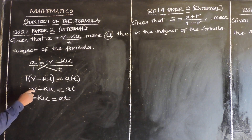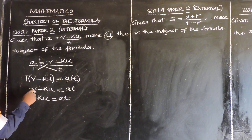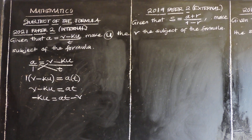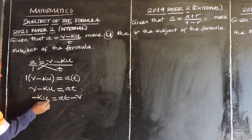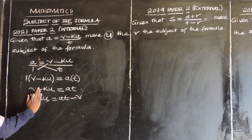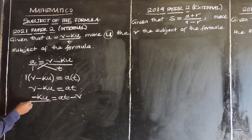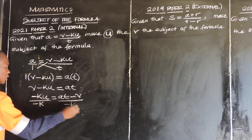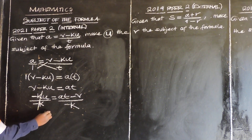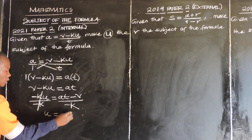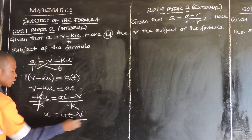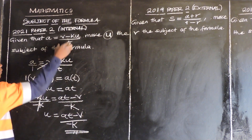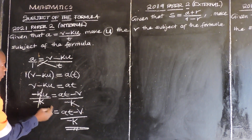Now we transpose this on the other side. This one is positive, so this side is going to become negative K. For us to remain with U, we need to remove this negative K. So we divide both sides by negative K. These two cancel, and we remain with U is equal to AT minus V over negative K. And so we've made U the subject of the formula.